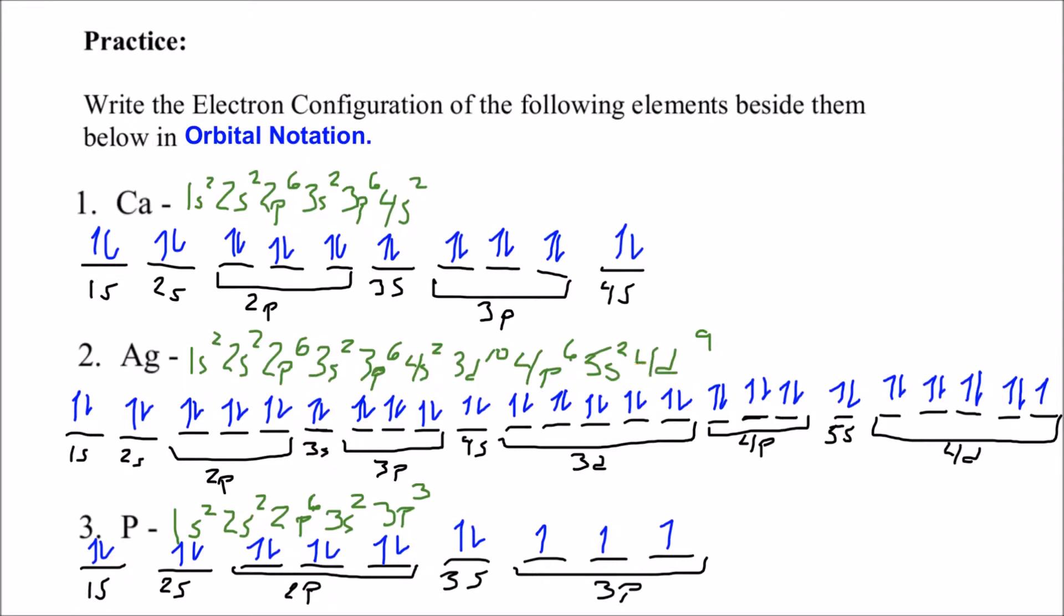Silver goes all the way to 4d9, so we're going to fill up all of the orbitals until we get to 4d, and then you go 1 up, 2 up, 3 up, 4 up, 5 up, and then we come back 6 down, 7 down, 8 down, 9 down, which leaves this one with only one electron in it.